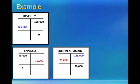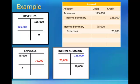Remember, if the income summary has a credit balance, that means that revenues are greater than expenses, and there is a net income equal to that credit balance. However, if expenses had exceeded revenues, income summary would have a debit balance, which would indicate a net loss. To summarize, in our journal, we will debit revenues $125,000 and credit income summary $125,000. Then we will debit the income summary $75,000 and credit expenses $75,000. The result will be a zero balance in revenue and expense accounts and a credit balance of $50,000 in income summary.